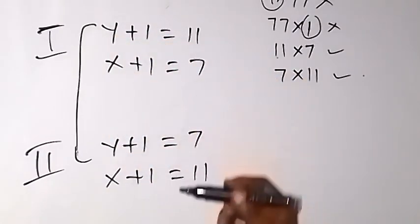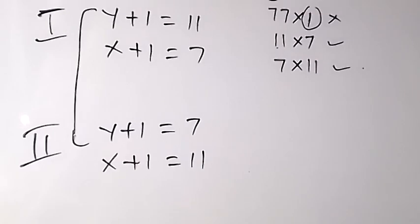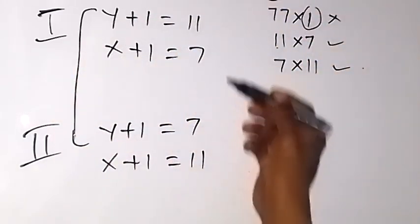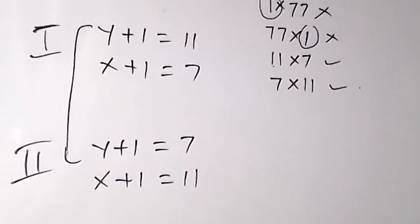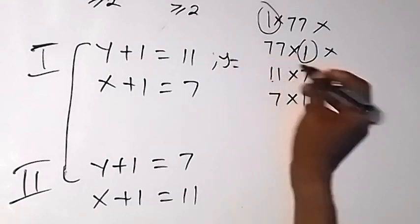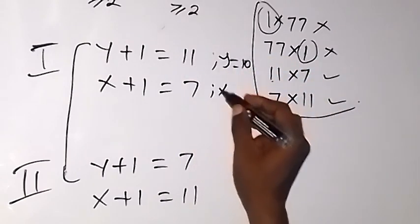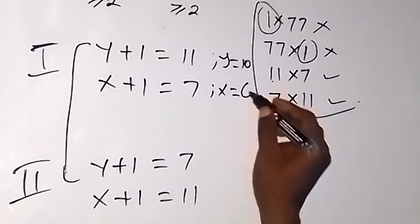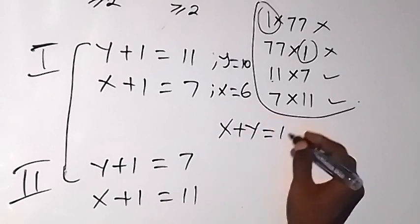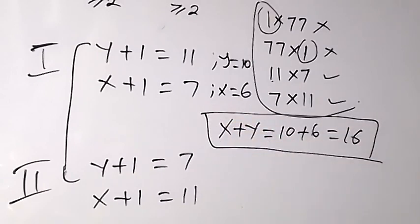We are finding the value of x plus y. From Case 1: y plus 1 equals 11 gives y equals 10, and x plus 1 equals 7 gives x equals 6. Therefore x plus y equals 10 plus 6, which gives us 16.